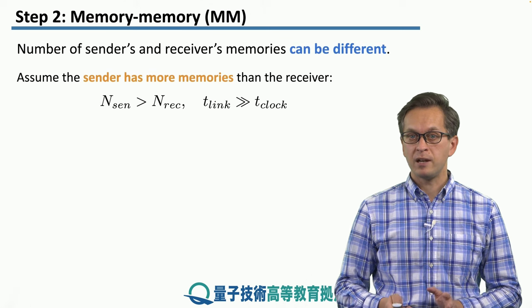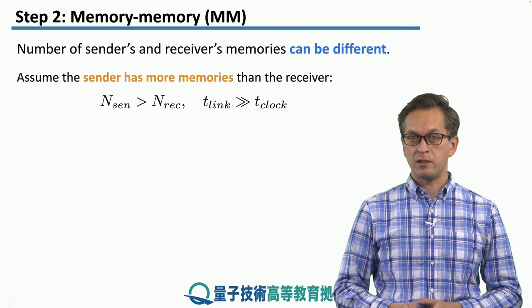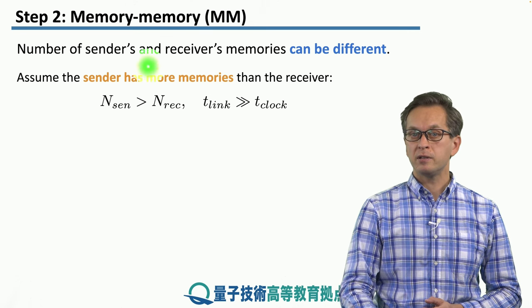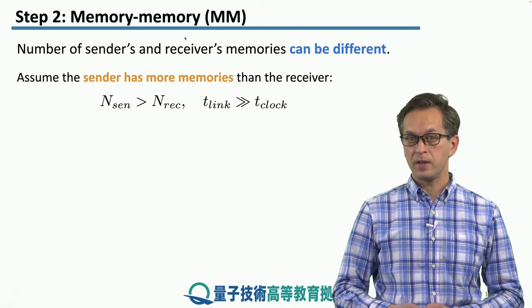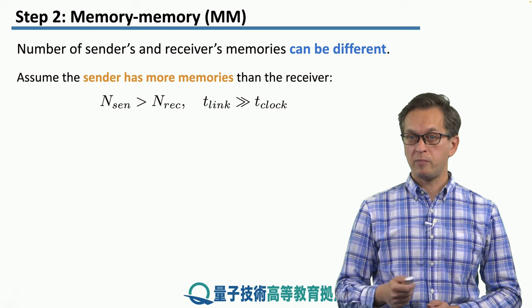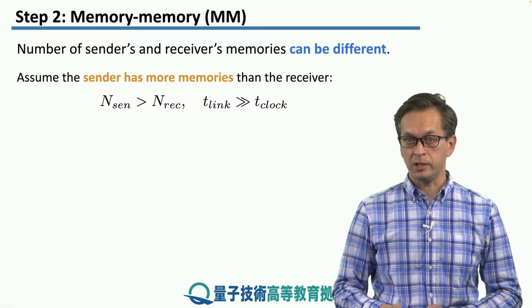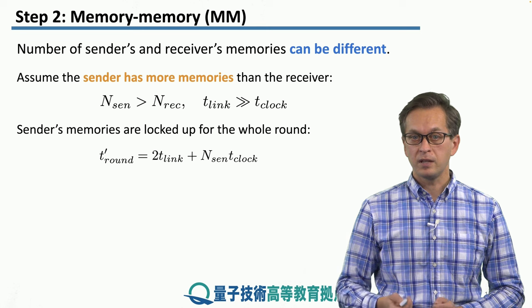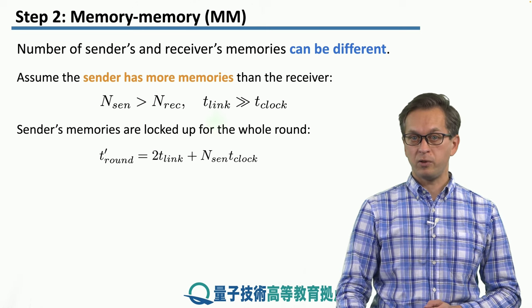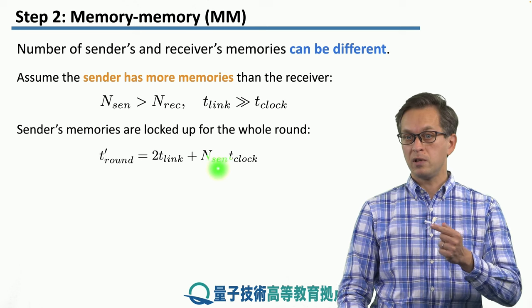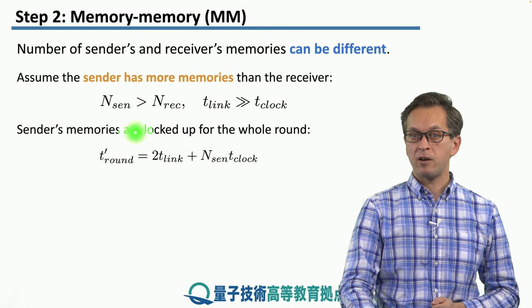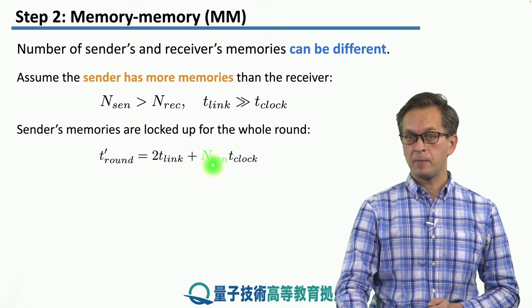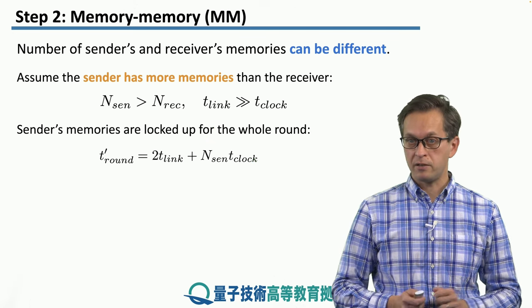In our analysis, we're going to assume different numbers of sender and receiver memories. In particular, we're going to assume the sender has more memories than the receiver, and also that T-link — the communication time between the two repeaters — is much larger than the clock time. The duration of one round is given by the following expression. The photons have to travel all the way distance L and come back, so our T-link has doubled compared to MIM architecture. The time to generate all the photons is given by T-clock times the number of memories at the sender's end.